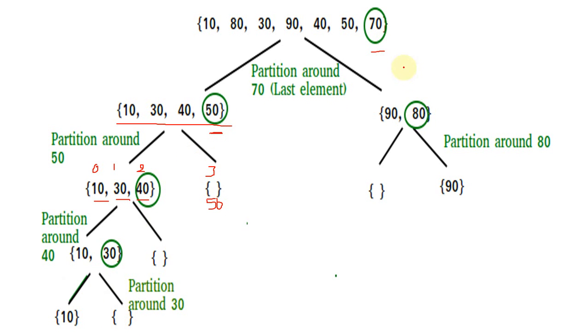Next on the right side, 90 and 80. Only two elements in the list. 80 will be our pivot. 90 is greater than 80, so 80 then 90. We get sorted elements: 10, 30, 40, 50, 70, 80, and last 90. This is the procedure. Once again watch this one. If you have any doubt regarding this procedure you can always ask.